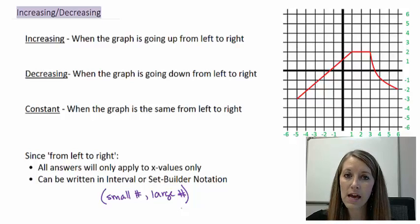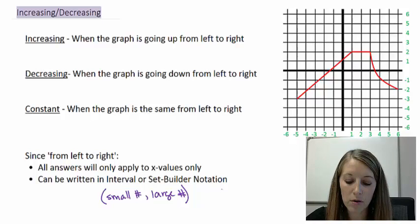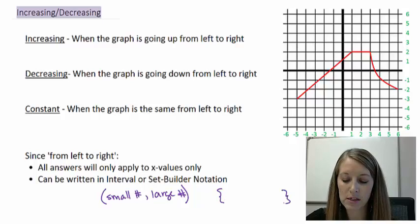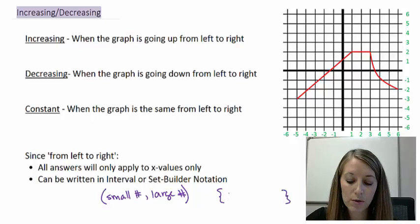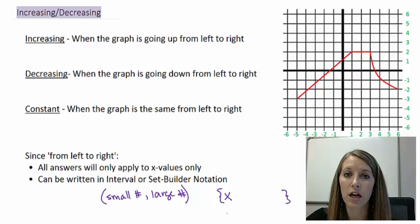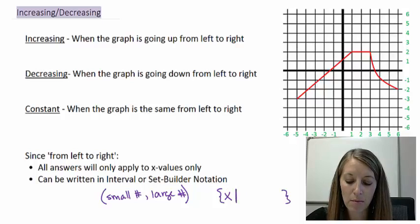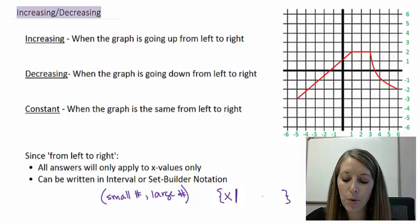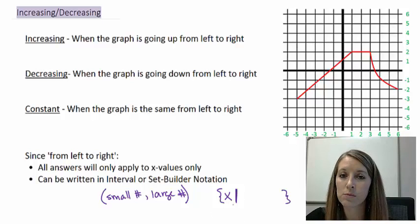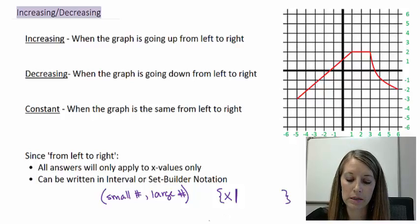You could also use set builder notation. Think of Bob the Builder — Bob means braces. Set builder notation starts with braces, then we use X, because all of our answers are talking about x values. Then the bar meaning 'such that,' followed by an inequality: X is greater than a number, X is smaller than a number, or X is between two numbers, depending on the situation.